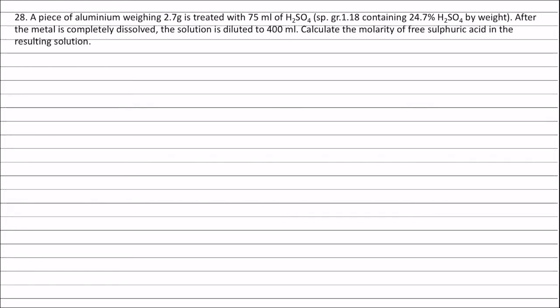Equivalents of sulphuric acid = weight of sulphuric acid (24.7) divided by equivalent weight of sulphuric acid (49). Volume of solution = mass divided by density = 100 divided by 1.18 ml, and volume of solution in litres = 100 divided by 1.18, divided by 1000 litres.